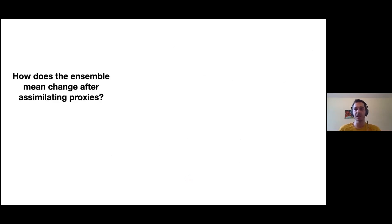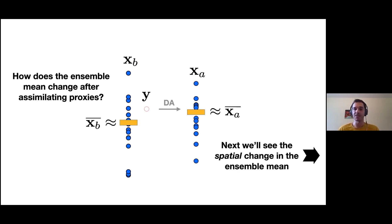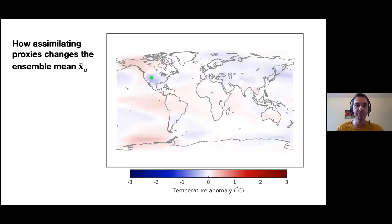Now let's look at how this works in a spatial context — how the ensemble mean changes after we assimilate proxies. We have an initial ensemble estimate and ensemble mean. We'll assimilate one proxy at a time to show the effects. We get a new estimate with a new mean, showing how assimilating proxies changes the spatial ensemble mean. This is a pseudoproxy reconstruction — not a real reconstruction, but illustrative of the process.